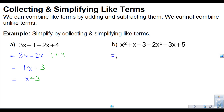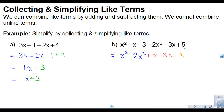Let's try another example. I notice there are some terms with x squared, some that are just x, and some that are constant terms. I'm going to write the x squared terms together first, then the x terms — there's a plus x and a minus 3x — and then the constant terms: minus 3 and plus 5.